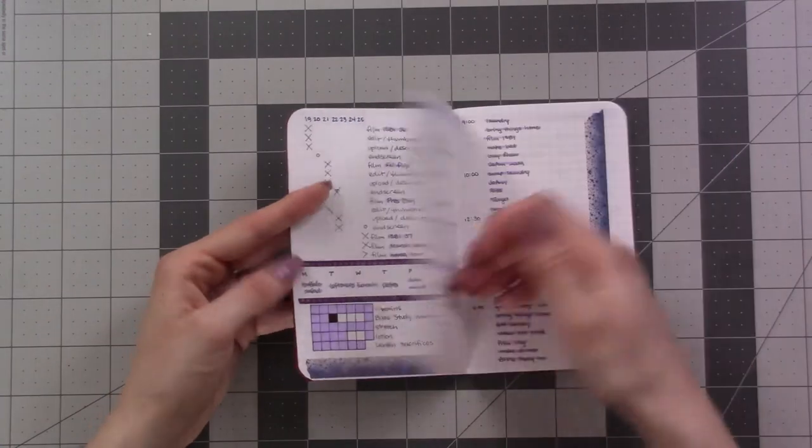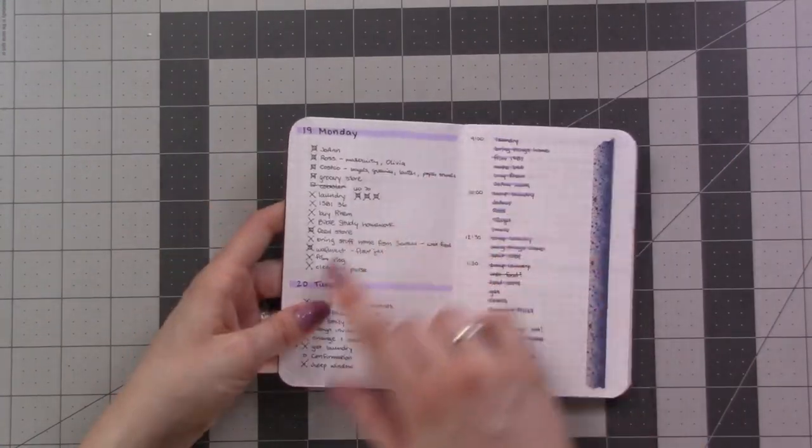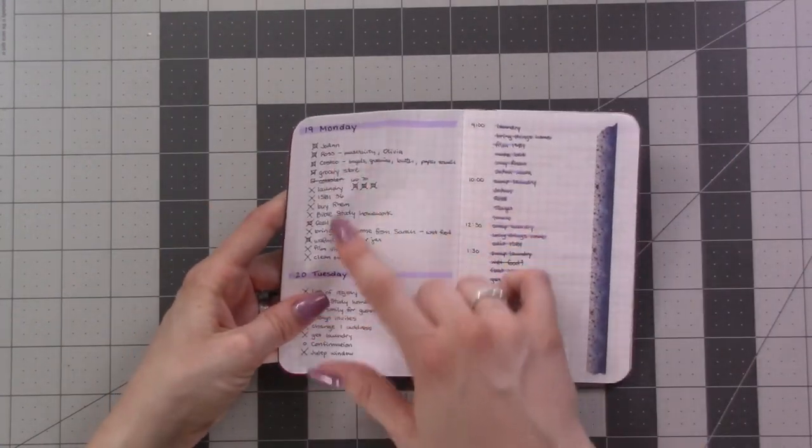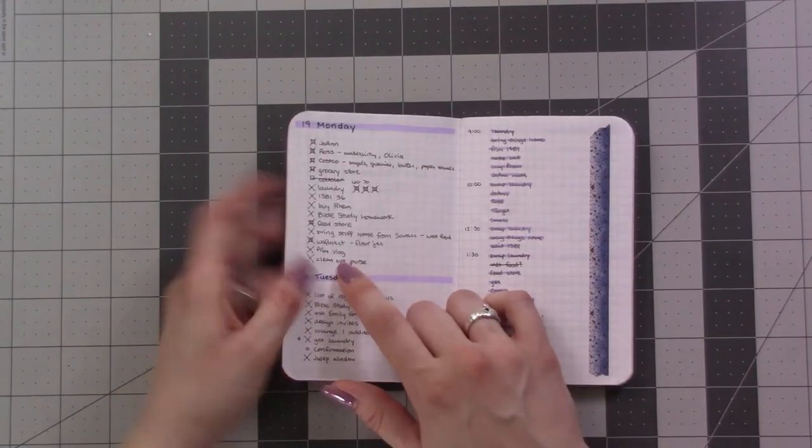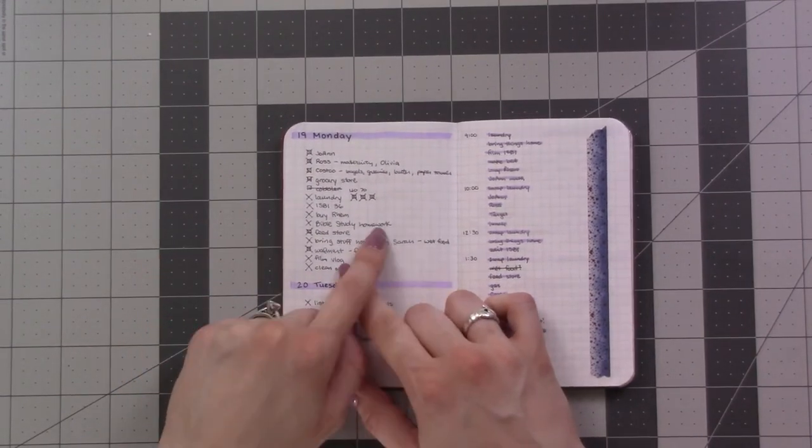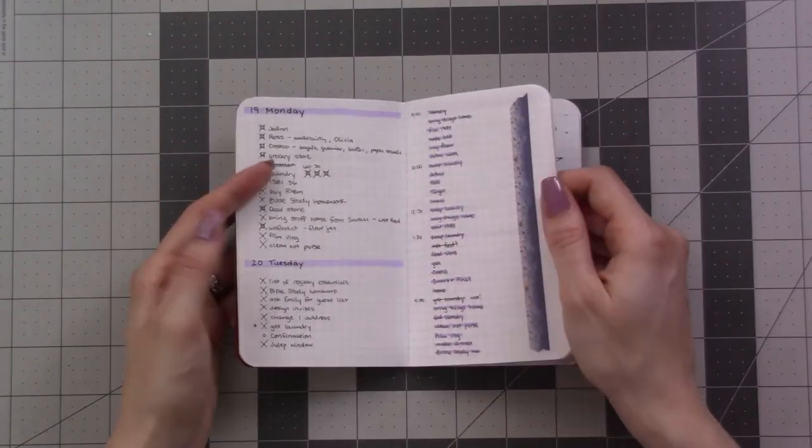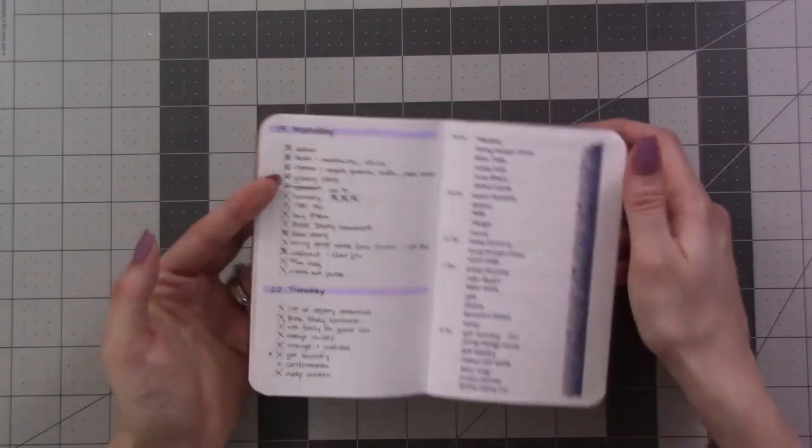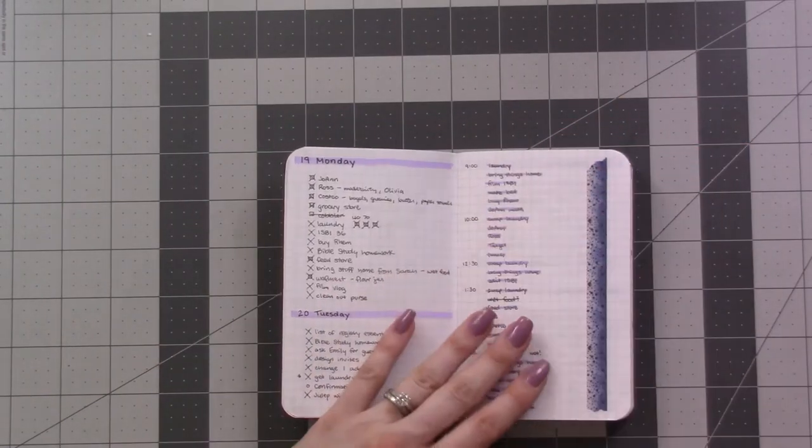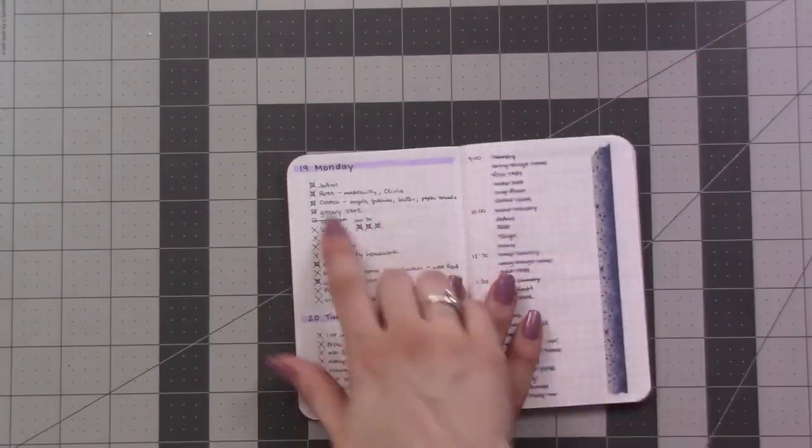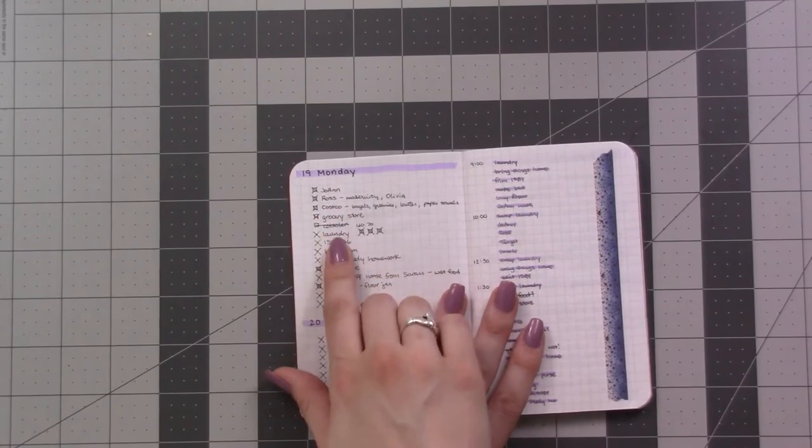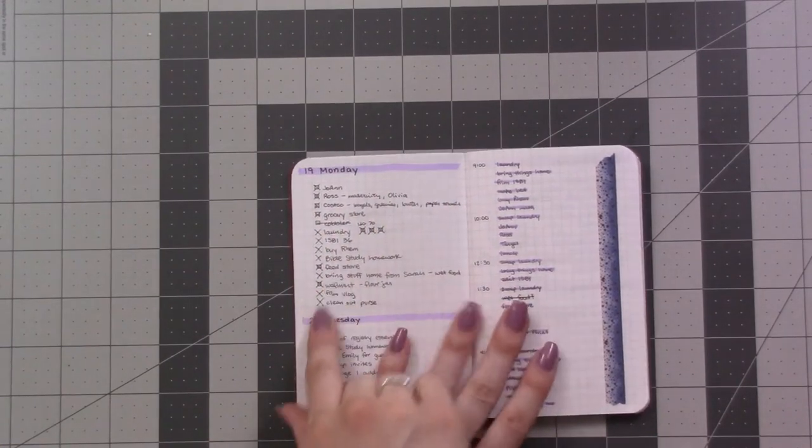On Monday I had been collecting a list of errands I wanted to do because I had the day off for President's Day but my husband didn't. So I was going to be home alone, and I saved up all of these different errands to run. I went to Joanne's, Ross, Costco, grocery store, the pet store.